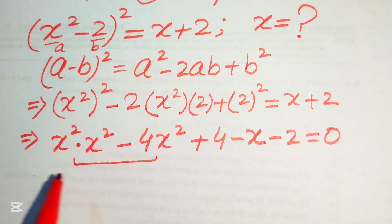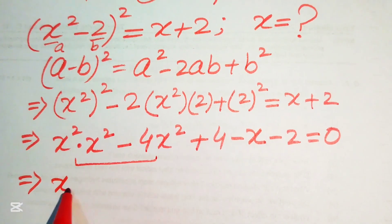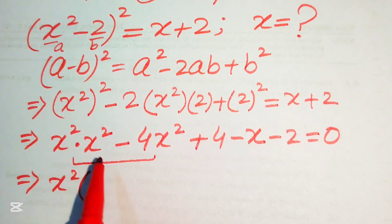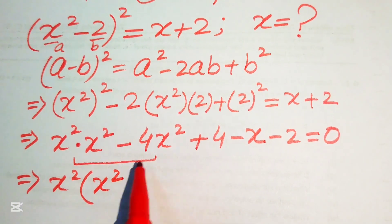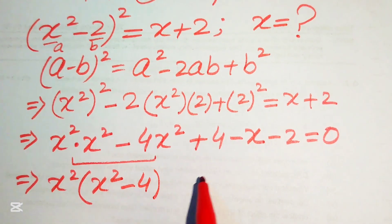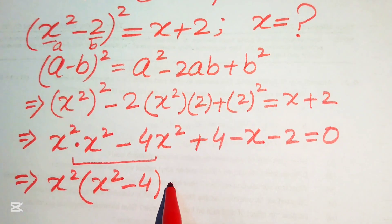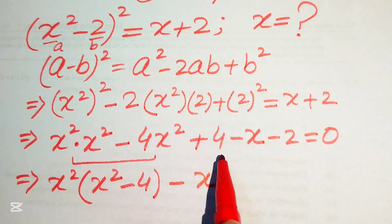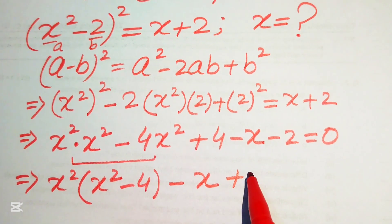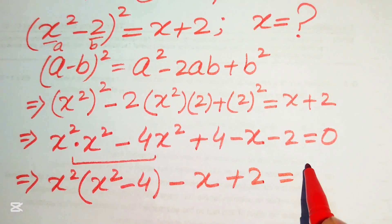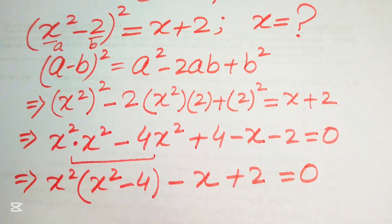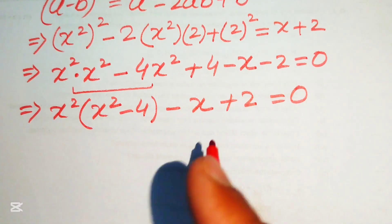Now we focus on the first two terms and take x² as a common factor. Taking out x², we get x²(x² - 4) - x + 2 = 0.